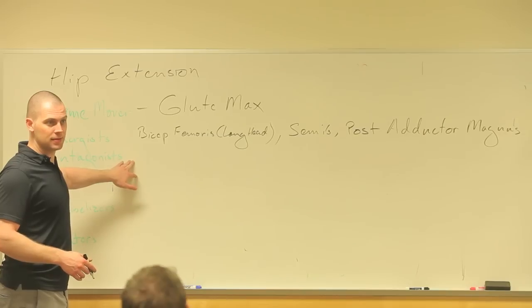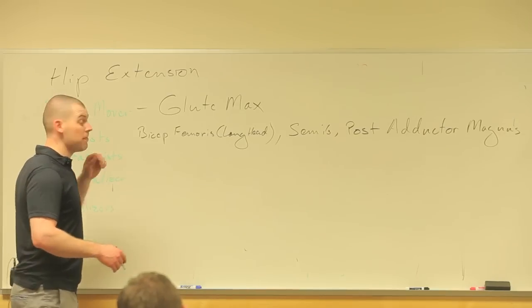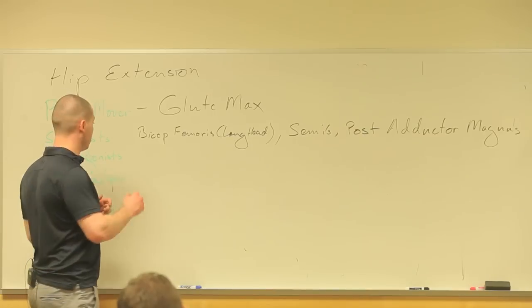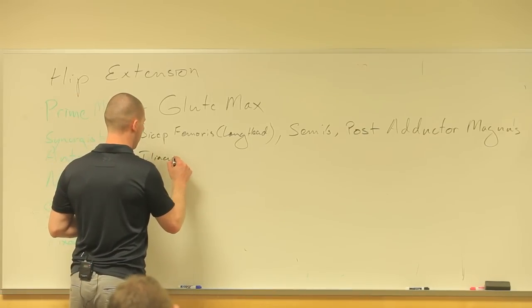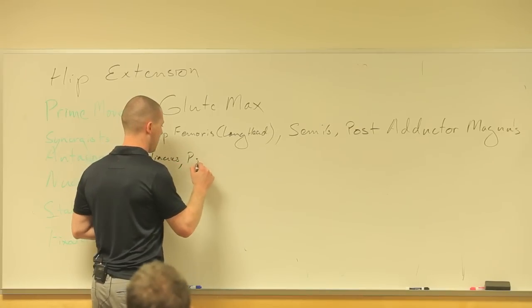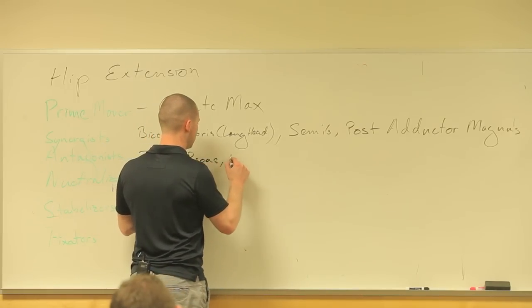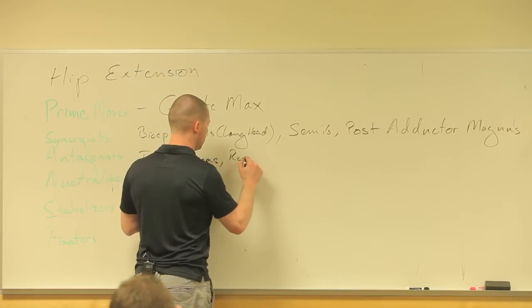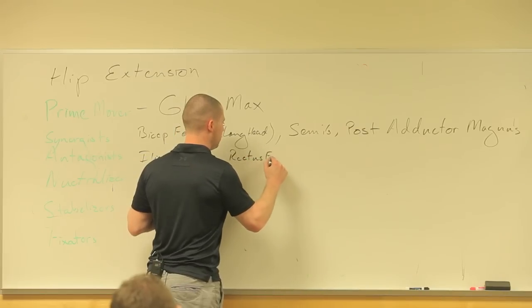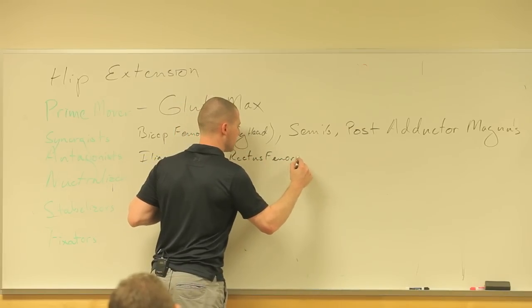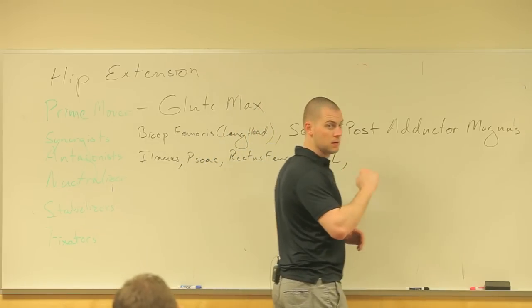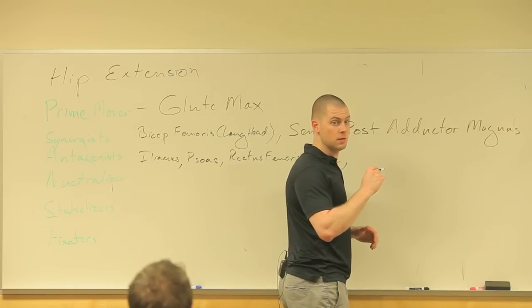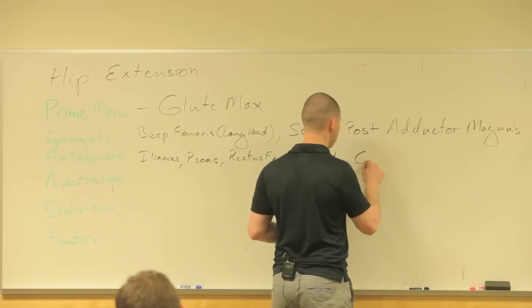Antagonists: who are my antagonists? All the muscles that do hip flexion. Iliacus, psoas, rectus femoris, gluteus minimus, TFL — keep going.